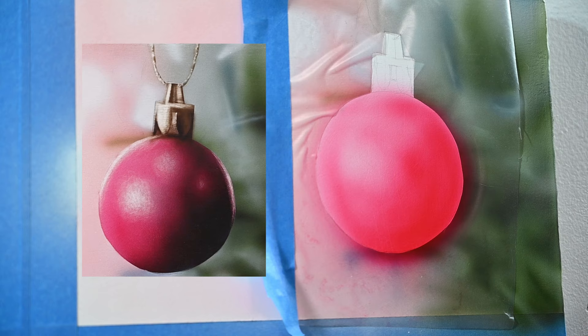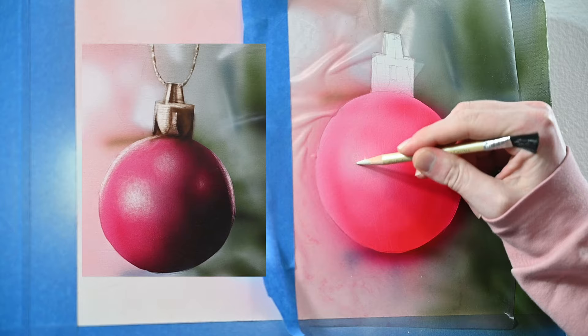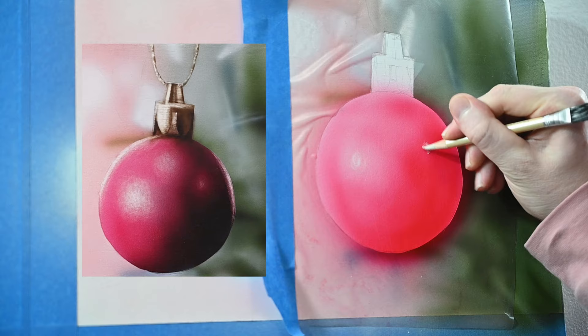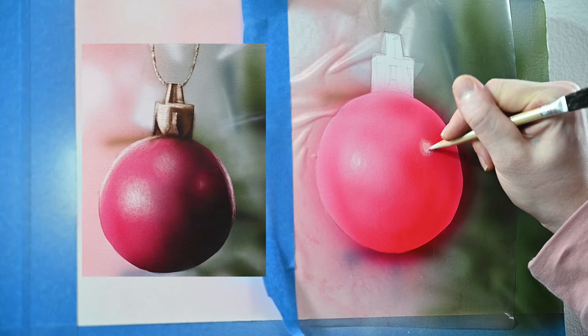I noticed these three specular highlights here. So I'm switching over to my eraser, and I'm just scratching them out. For these highlights, I'm just going to use a small circular motion, starting in the center, and then working my way out.